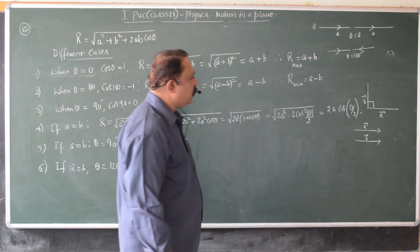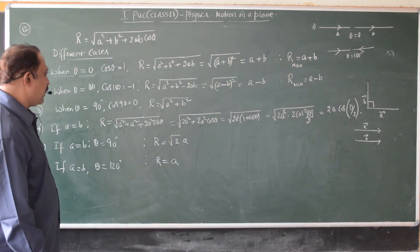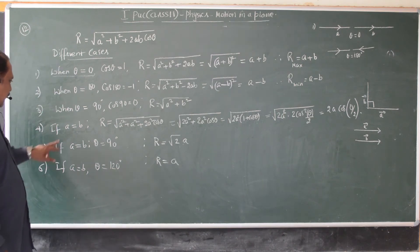Which gives 2a cos theta by 2. That is the value of the magnitude of the resultant if a equals b.